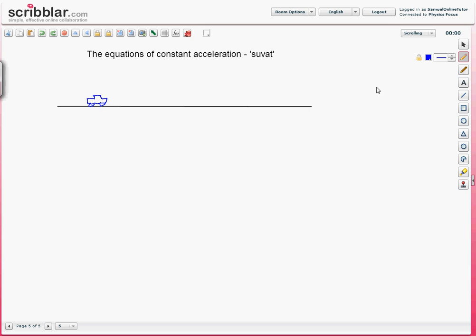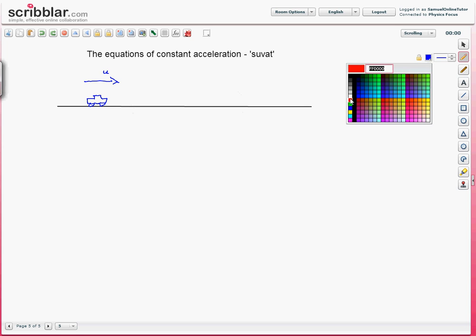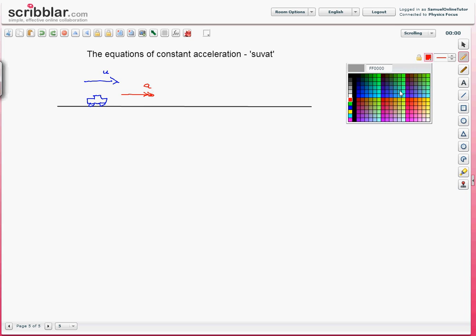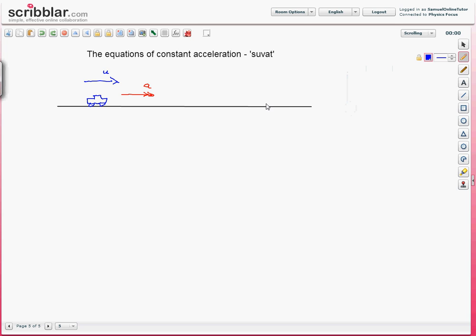It is travelling initially with a velocity of u. The car accelerates with an acceleration a and at some later point here is my car again, it is now travelling with a larger velocity, presumably v.